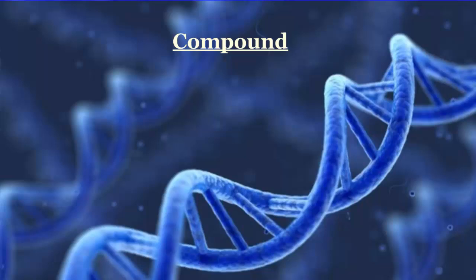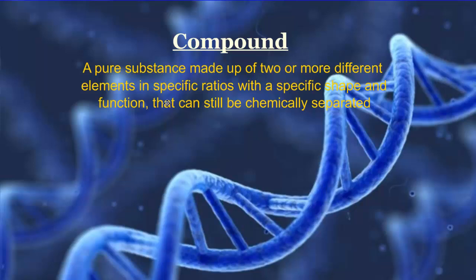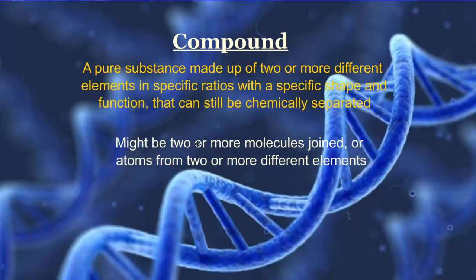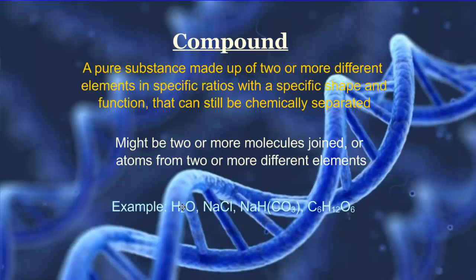Sometimes instead of molecule we use the word compound. A compound is a pure substance made up of two or more different elements in specific ratios, with a specific shape and specific function, that can still be chemically separated. Examples include H2O, NaCl, NaHCO3, and C6H12O6 — all compounds where we have a pure substance made up of two or more different elements.